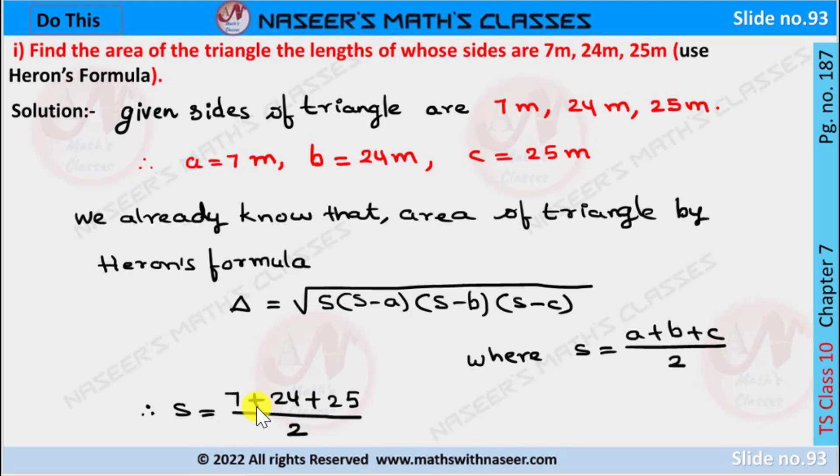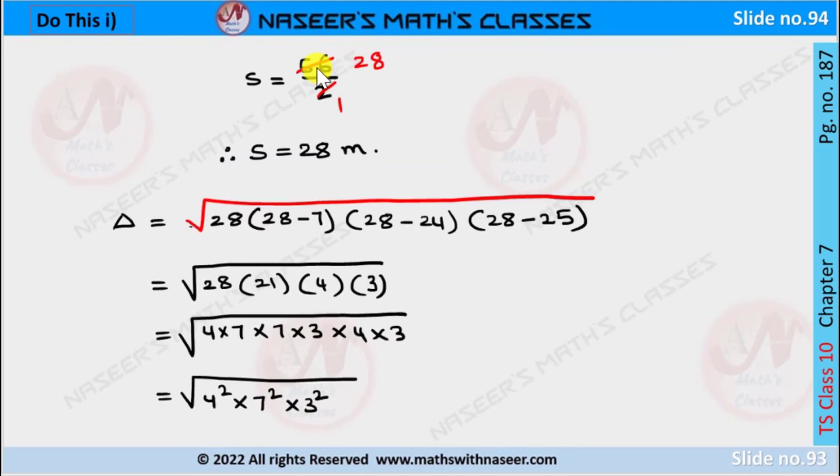S equals (7+24+25)/2. After adding 7 plus 24 plus 25 we get 56, then S equals 56/2. Canceling, 2 into 56 gives 28.